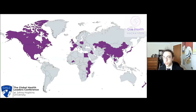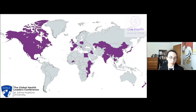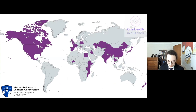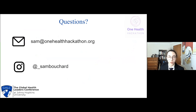At OHH 2020, we had 300 signups from 22 different countries. This is a map showing the current signups for OHH 2021. We just opened registration and we already have people from 24 different countries. This is a really good opportunity to meet a lot of other people from around the world who are interested in global health. If you have any questions, here's my contact information. Thank you so much for your time.